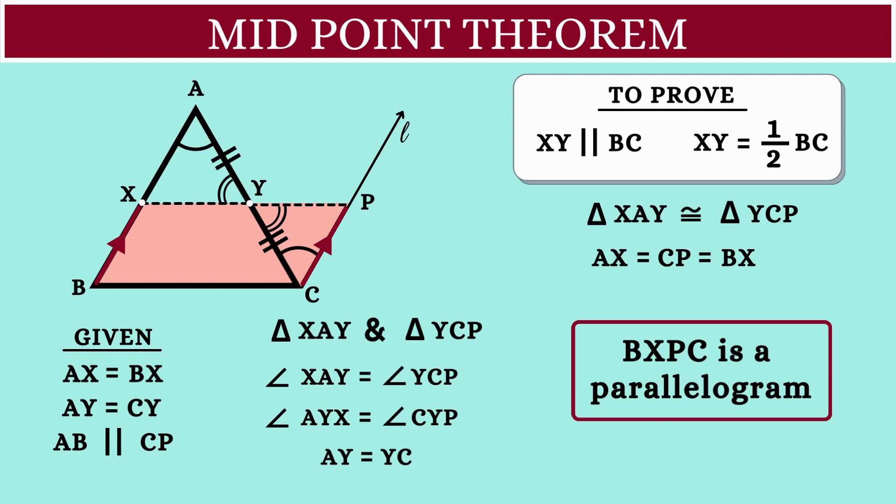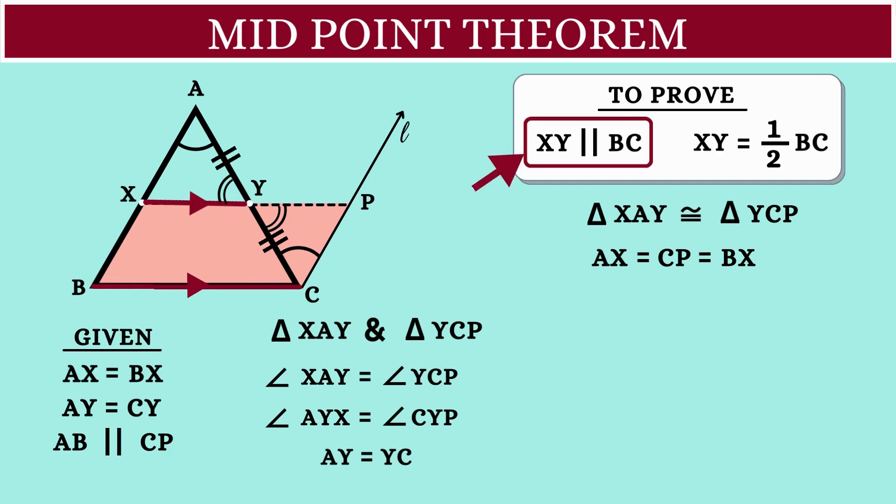This will also conclude that the sides XP and BC are parallel. So we also have XY is parallel to BC, and thus we prove the first point.